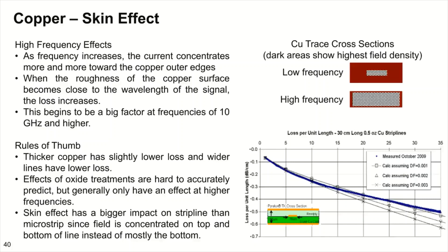The skin effect has a bigger impact on stripline rather than microstrip, since the field is concentrated on both the top and bottom of the line instead of mostly the bottom. It depends where the energy field is — if your ground plane is below, you worry about the bottom side; if the ground plane is on top, you worry about the top side. Having a smooth side can truly lower your potential skin effect and improve high frequency performance.